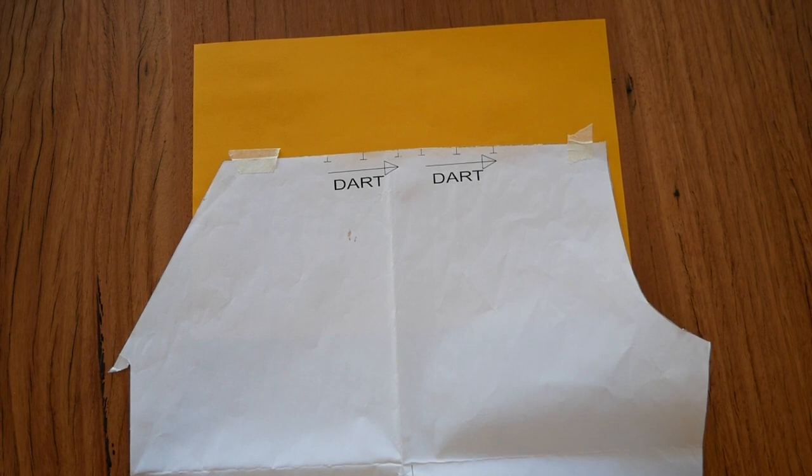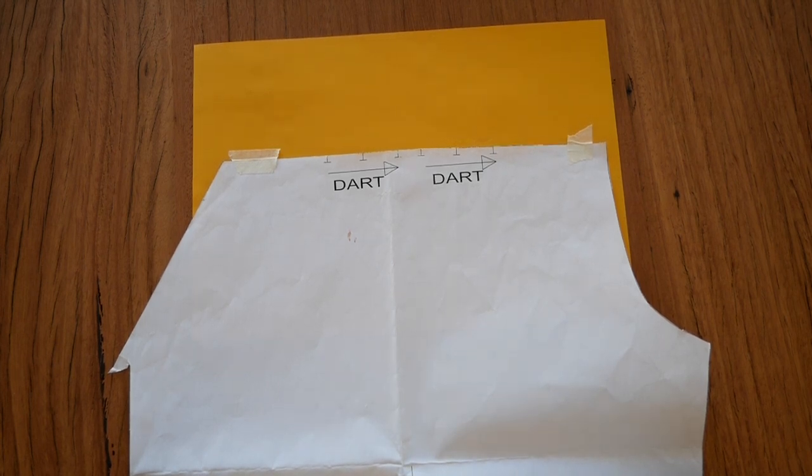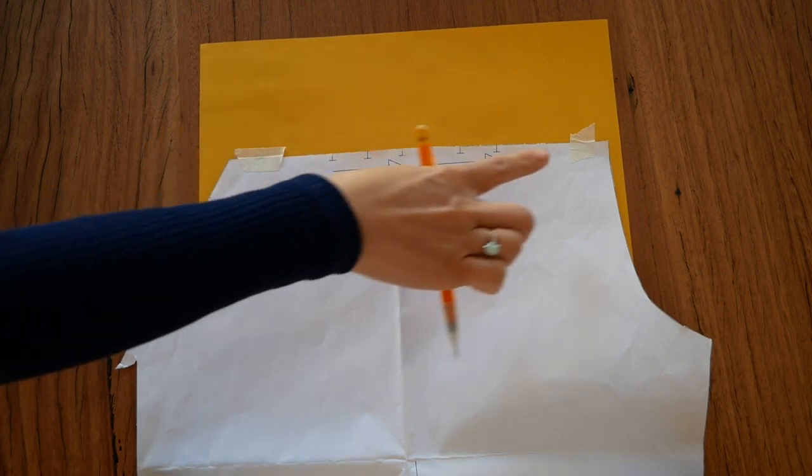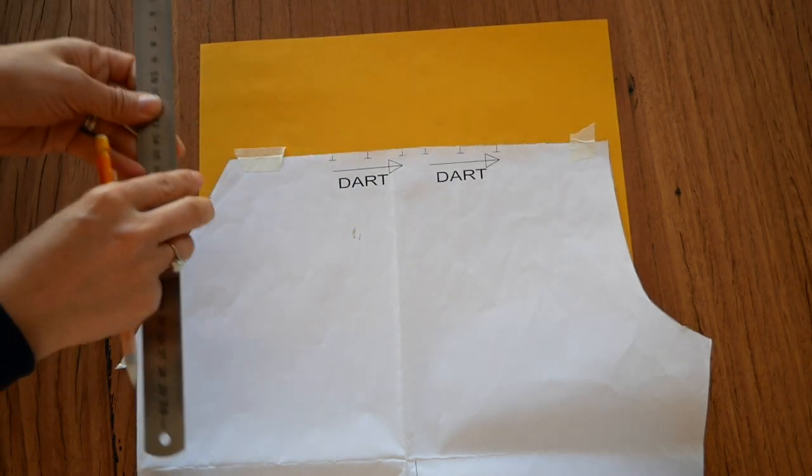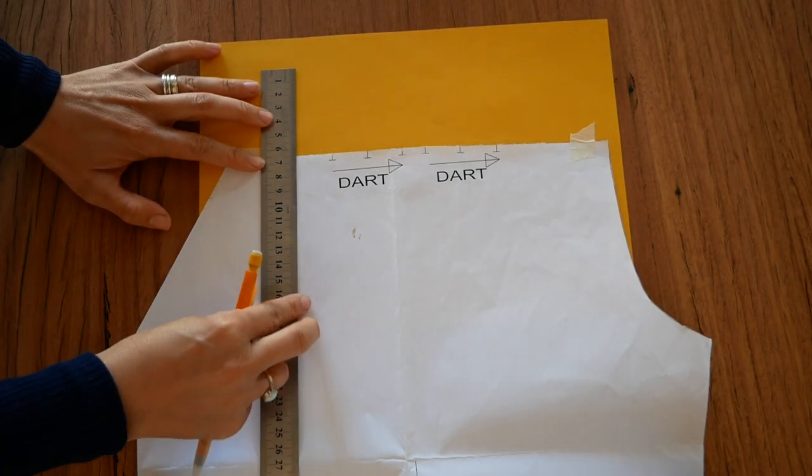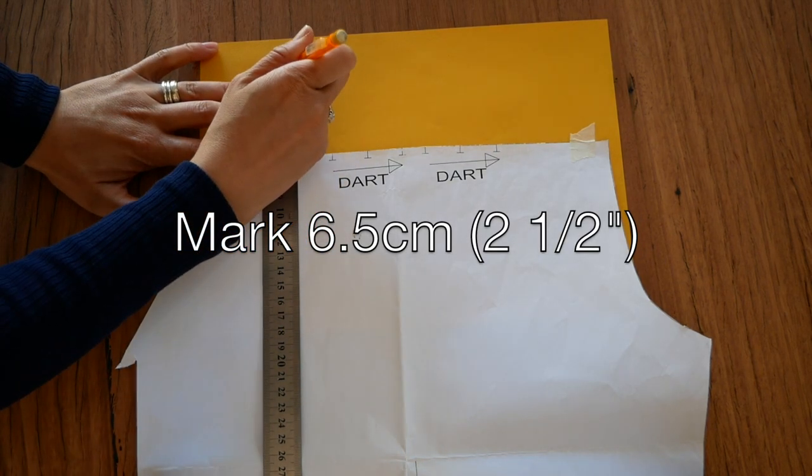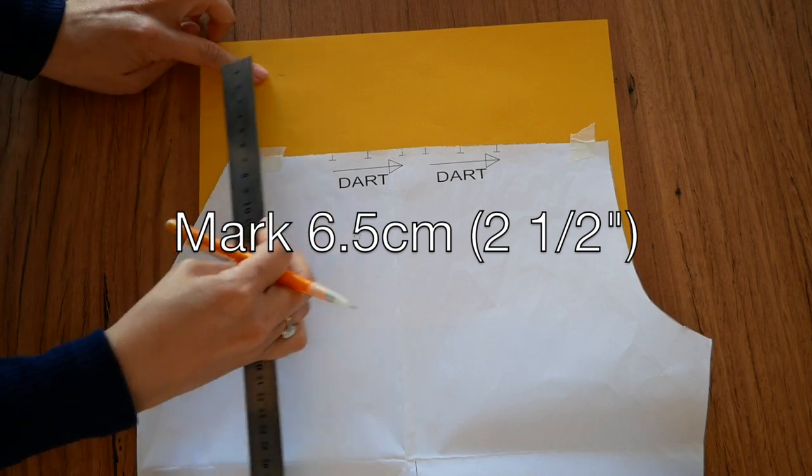Let's begin with the front pants pattern piece. I've stuck a yellow piece of paper to the waistline of the front pants pattern piece with some masking tape. We want to increase the crotch length, so to do that we're going to raise the waistline by 6.5 centimeters or 2.5 inches.